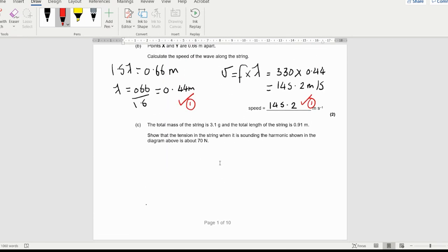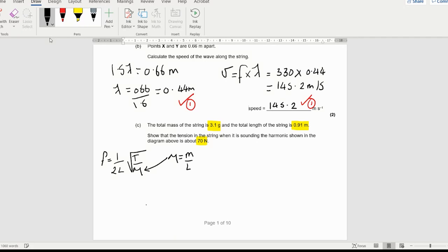This is quite a cheeky little question. The total mass of the string is 3.1 grams, and the length of the string is 0.91 meters. Show that the tension in the string when sounding the harmonic shown is about 70 newtons. There's one formula in the data sheet: F equals 1 over 2L root tension over mu. Mu is mass per unit length, like a one-dimensional density. The mass is 3.1 divided by 1000 divided by 0.91, which equals 3.4 times 10 to the minus 3 kilograms per meter.